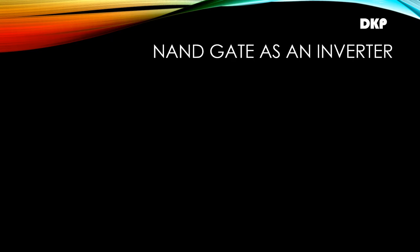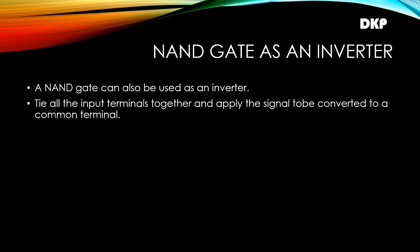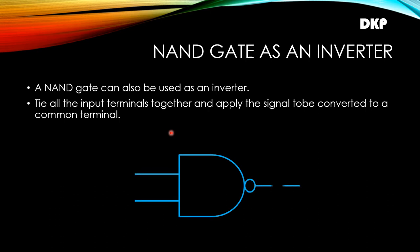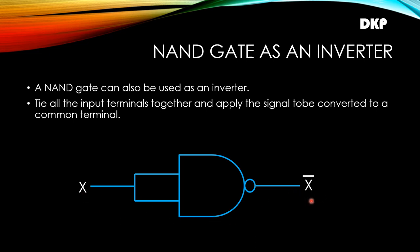Now let us see how we can use a NAND gate as an inverter. A NAND gate can also be used as an inverter. To do this, tie all the input terminals together and apply the signal to be converted to the common terminal. Here in the logic symbol of the NAND gate with two inputs, we tie the two terminals together and apply the signal x. X will be converted to x-bar. If you give 0 as input you get 1 as output, and if you give 1 as input you get 0 as output.